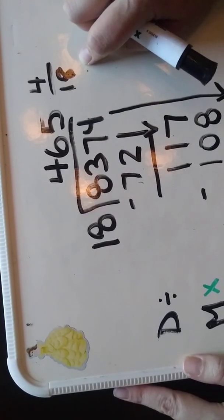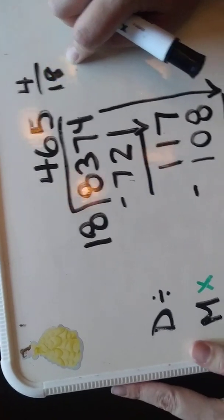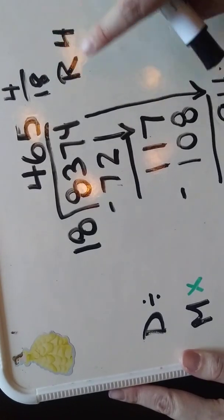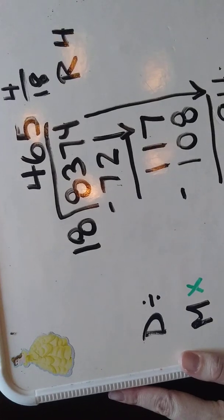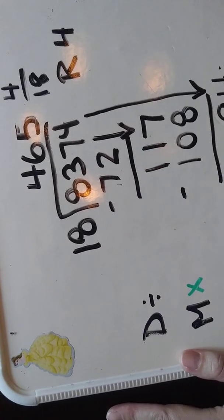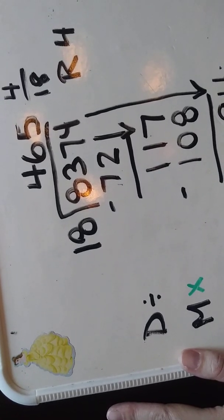Or you can simplify this to 2/9. That also works. It's really important. Some teachers say you can write R4 which means remainder 4. But really it doesn't really mean anything. They want you to represent it as a fraction or eventually as a decimal. And I'll show you how to do that in another video.